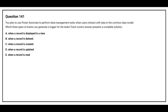Question number 141. You plan to use Power Automate to perform data management tasks when a user interacts with data in the Common Data Model. Which three types of event can generate a trigger for the task? Option A: when a record is displayed in the view. Option B: when a record is deleted. Option C: when a record is created. Option D: when a record is updated. Option E: when a record is read.